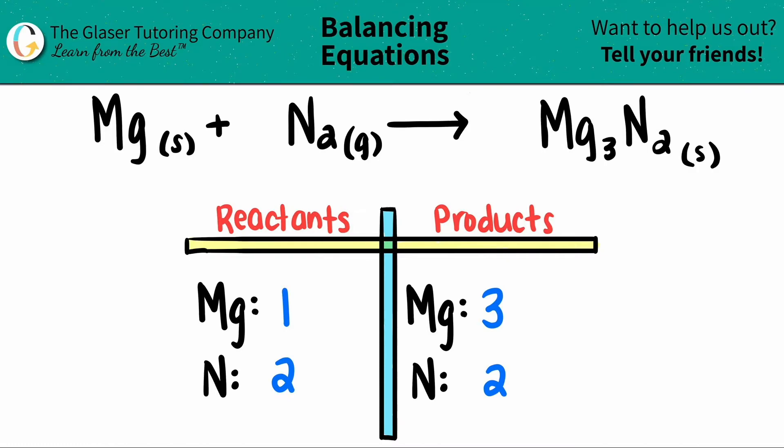Okay, so it looks like the nitrogens are balanced, right? All we have to do here is just balance the magnesium. Always start with the lower number to get to the bigger number by multiplication. One times what will get us to three?